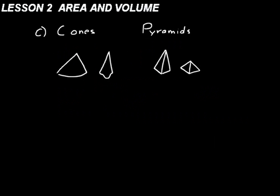Now let's talk about cones and pyramids. Cones have a curved base — usually a circle — and pyramids have polygons for their bases, like a triangle or a quadrilateral. Just like cylinders and prisms, there's one formula to calculate the volume of a cone or pyramid: it's equal to one-third the area of the base times the height perpendicular to the base. We'll put the perpendicular symbol to help you remember.